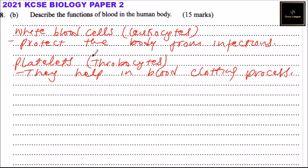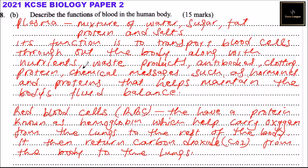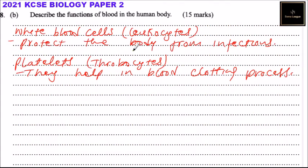In summary, blood components include plasma, which transports nutrients and waste; red blood cells, which carry oxygen from the lungs to the body and return carbon dioxide; white blood cells, which protect against infection; and platelets, which help in blood clotting. That concludes question number eight and the end of paper two.